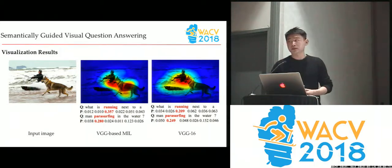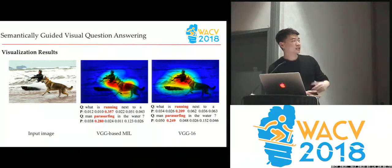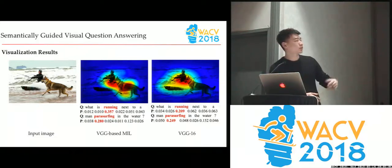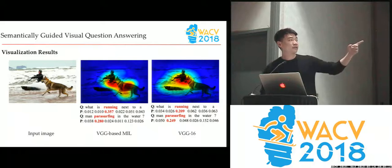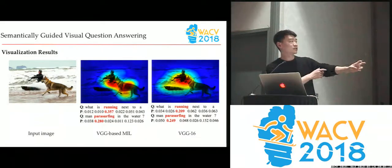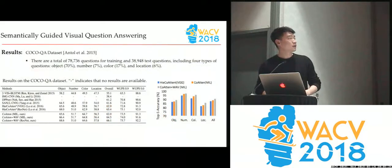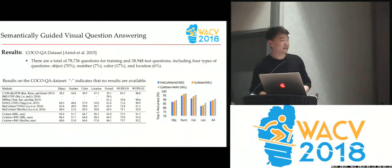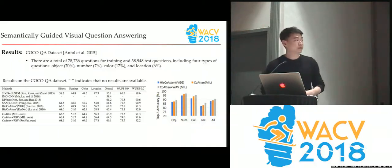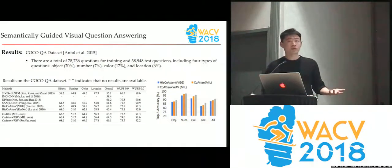We visualize the benefits of incorporating the multiple instance learning strategy for attributes detection. The keywords are highlighted in red font. You can see 'running,' which is a verb, receives a better attention score — higher score means higher attention. In the image we attend not just to the person but also to the dog, and the ground truth for this case is 'dog.'